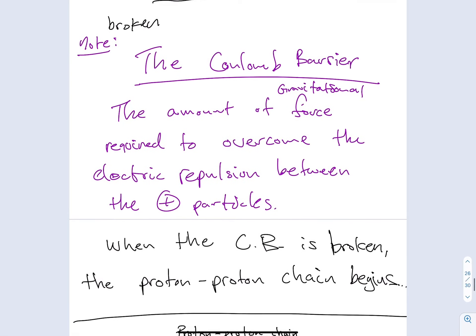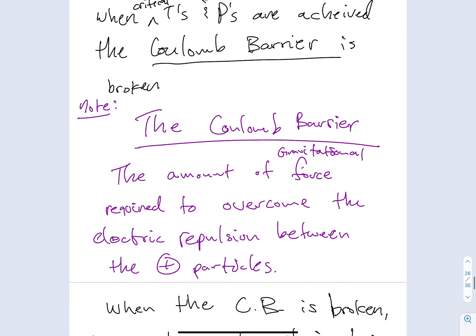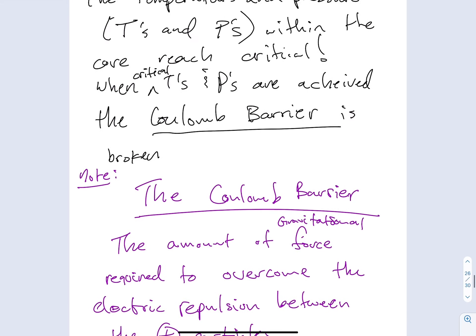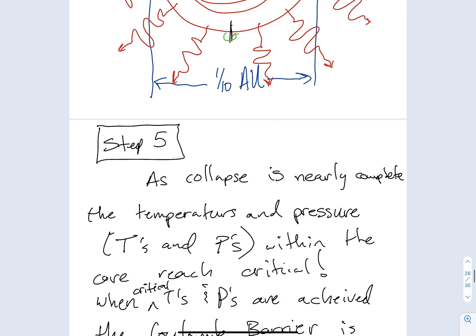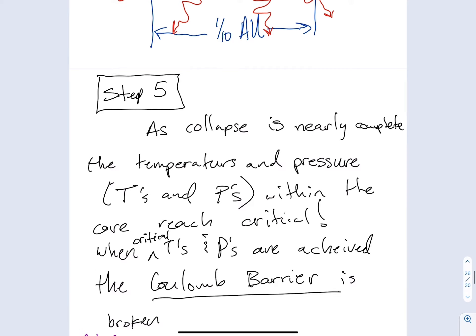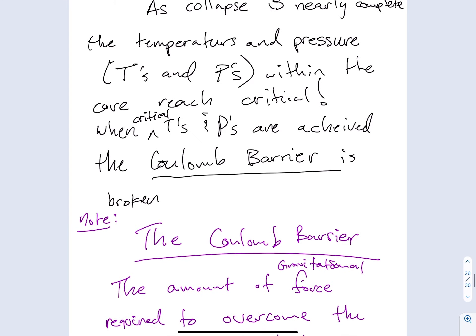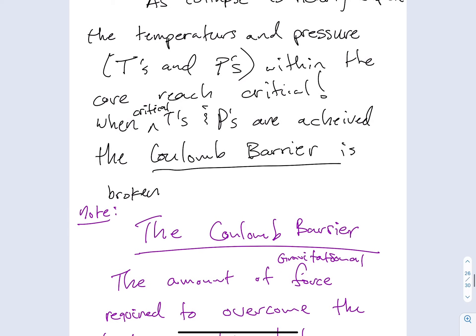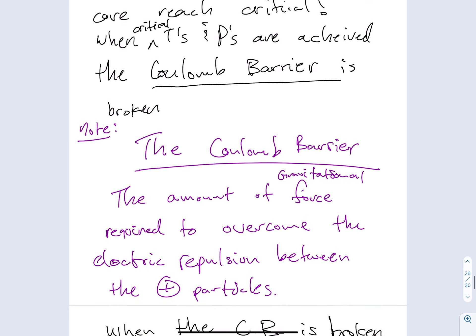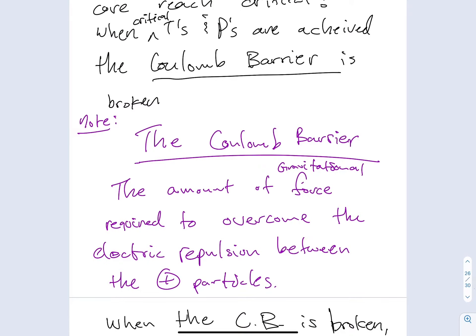So this is where we left off in class. We were discussing the beginning states of any star, and we got to the point that we labeled as step five, where we have a protostar that has nearly completed its collapse, and the Coulomb barrier was broken.